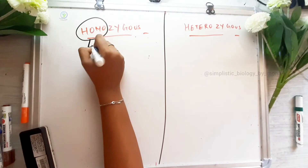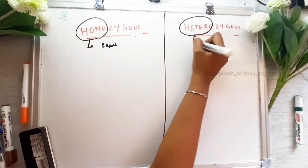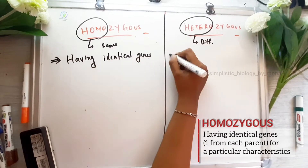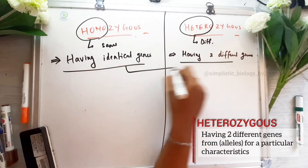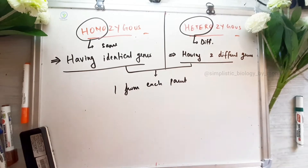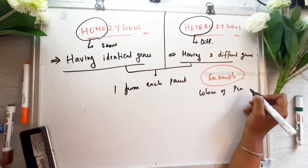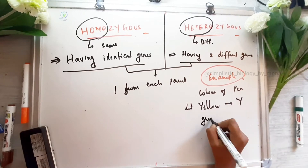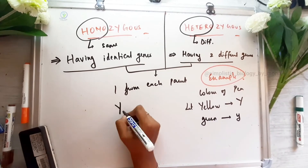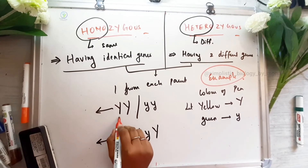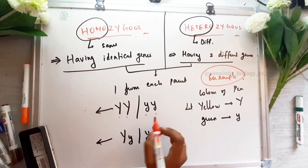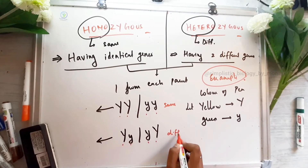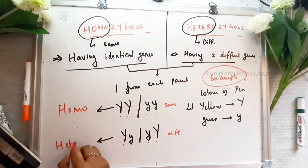Homozygous and heterozygous: homozygous means identical alleles and heterozygous means different alleles. As an example with pea plant color, yellow is represented by capital Y. So Y-Y is homozygous — same alleles — while Y-y is heterozygous — different alleles.